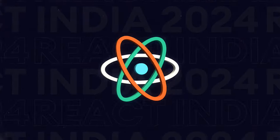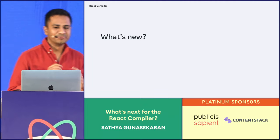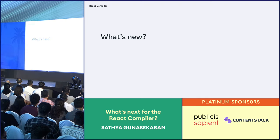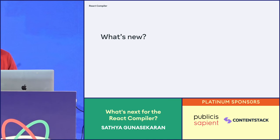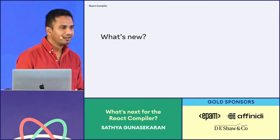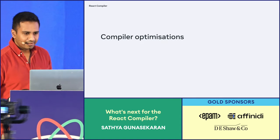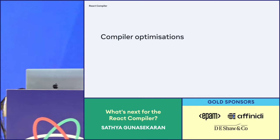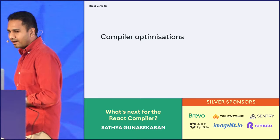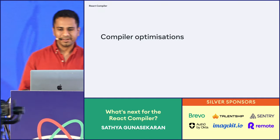We open sourced the React compiler earlier this year, and the response has been overwhelmingly positive. We've been working hard to improve it since open sourcing — we added support for more syntax and even optimized the generated code. There are too many compiler optimizations to go through right now, so I picked a few to give you an idea of the kind of work we've been doing.